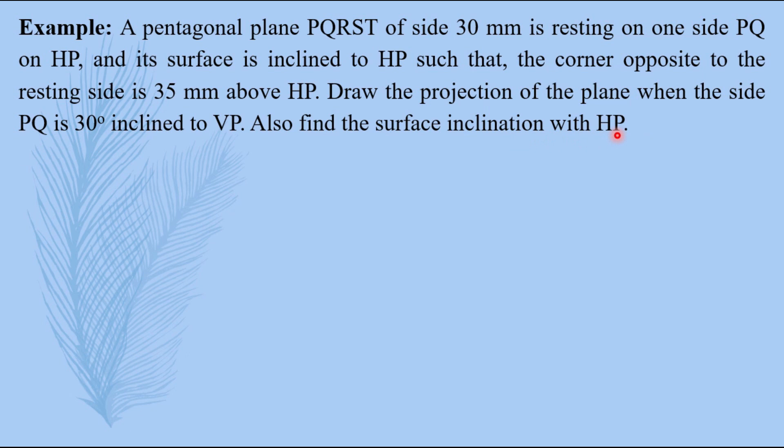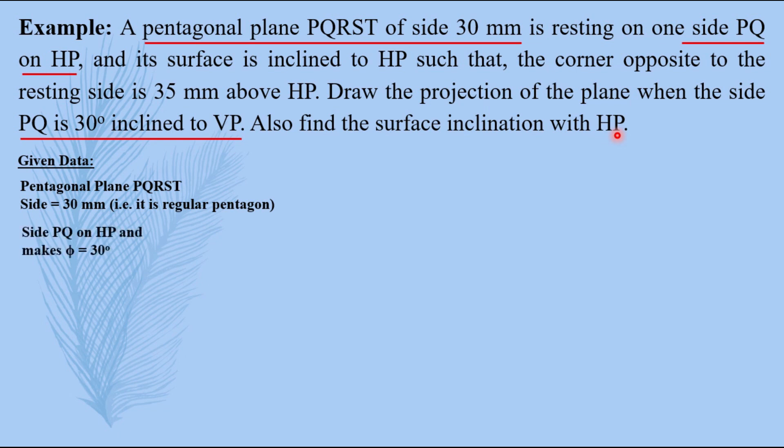Let us write down the given data. Pentagonal plane PQRST of side 30mm - if only one side is mentioned it means it is a regular pentagon. Then side PQ on HP and it is 30 degrees inclined to VP, this is another given data. Then surface is inclined to HP, this is important. Corner opposite to the resting side is 35mm above HP, and to find theta, that is inclination with HP.